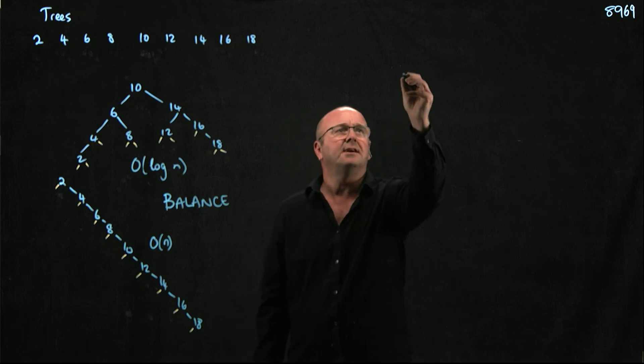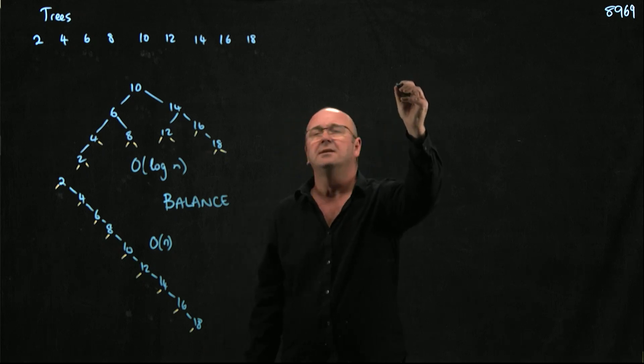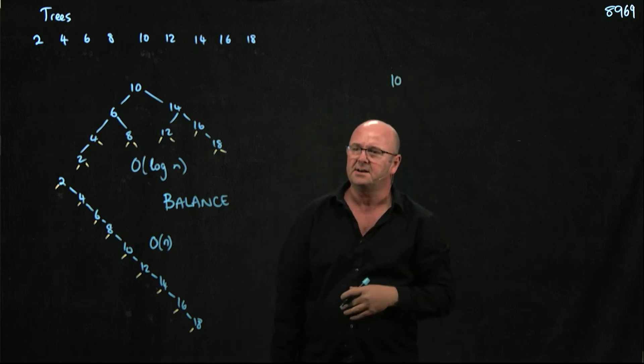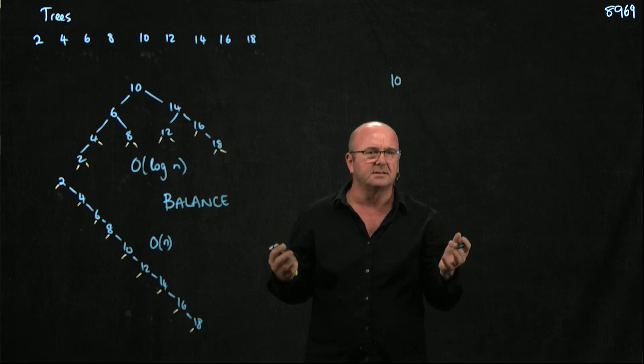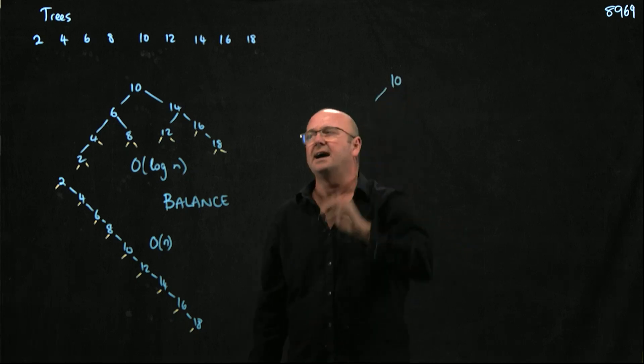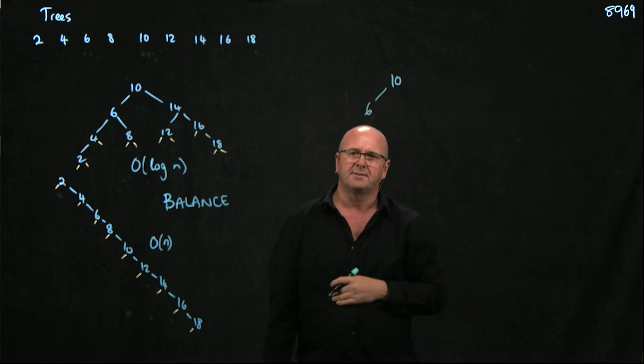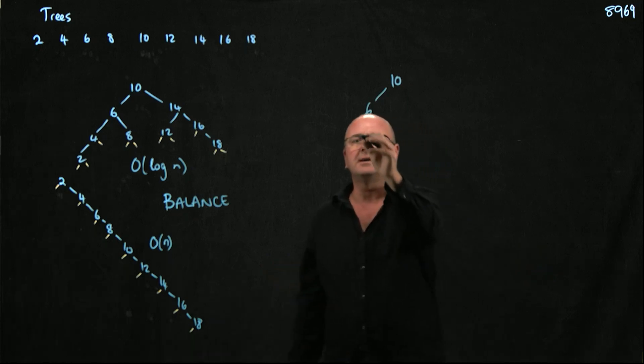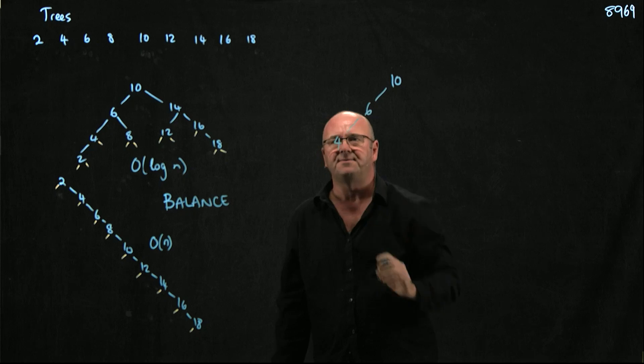So here is a part of that tree. Let's say we've got a 10. We add a 10 and everything's fine. Our tree's balanced. And then we add a 6. Everything's fine. Our tree's balanced. And then we add a 4.